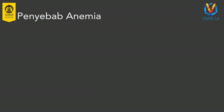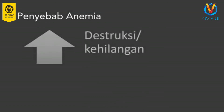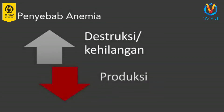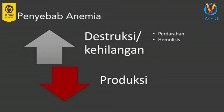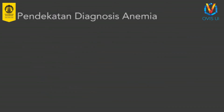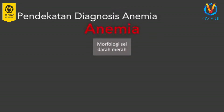Secara umum, penyebab anemia dapat dibagi menjadi dua: pertama peningkatan destruksi sel darah merah atau kehilangan, dan kedua penurunan produksinya. Peningkatan destruksi sel darah merah dapat disebabkan oleh perdarahan dan hemolisis yaitu pecahnya sel darah merah sebelum waktunya. Sementara itu, penurunan produksi sel darah merah dapat terjadi karena gangguan pada sumsum tulang dan defisiensi substrat yang dibutuhkan untuk produksi sel darah merah. Setelah diagnosis anemia ditegakkan berdasarkan nilai hemoglobin, penyebab anemia perlu dicari tahu supaya tata laksana yang tepat dapat diberikan.